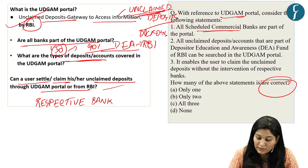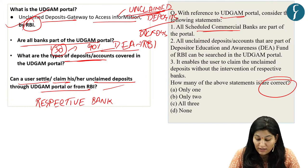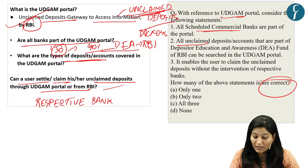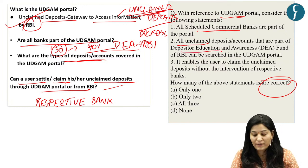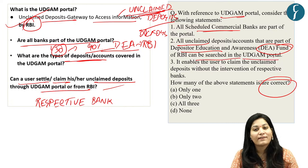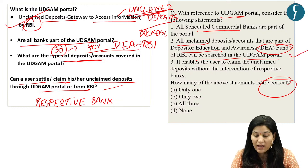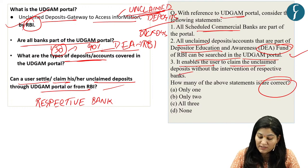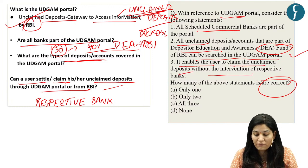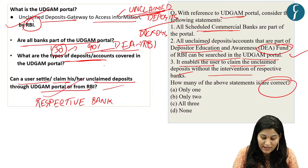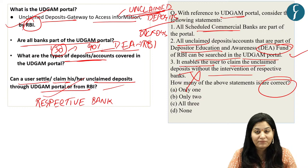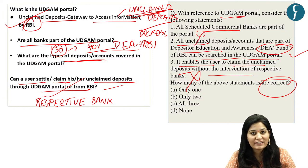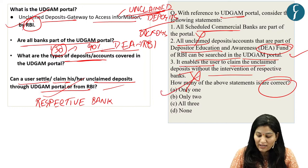Practice question on Udgam portal: Statement 1 — all scheduled commercial banks are part of the portal — is incorrect, only 30 banks are part of it. Statement 2 — all unclaimed deposits that are part of the Depositors Education and Awareness Fund of RBI can be searched in the Udgam portal — is correct. Statement 3 — it enables users to claim unclaimed deposits without the intervention of respective banks — is incorrect. Answer: Option A, only statement 2.